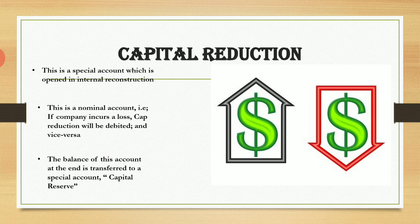At the end, when we close the capital reduction account, the balance 90% of the time will be transferred to the capital reserve. In other situations, the capital reduction account will tally — that is, the debit side will equal the credit side. If the debit side is heavy, it means expenses are more, so that profit will be the balancing figure. We will understand this better when solving practical sums.